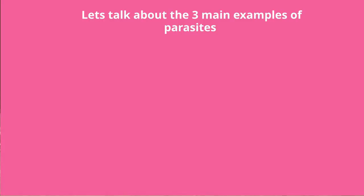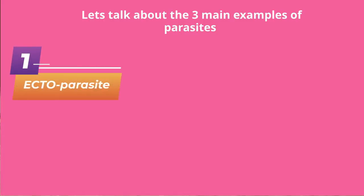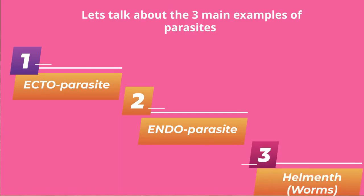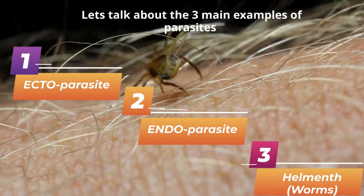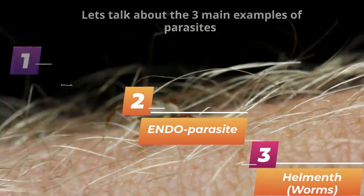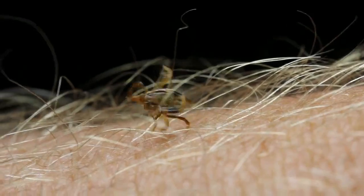Now let's talk about the three main examples of parasites: ectoparasites, endoparasites, and helminth worms.